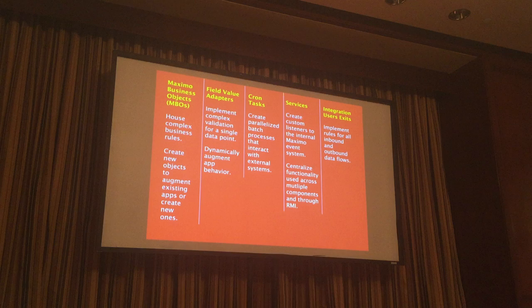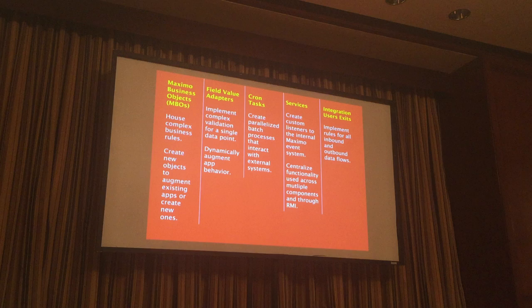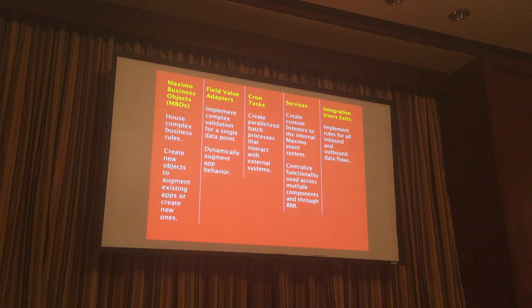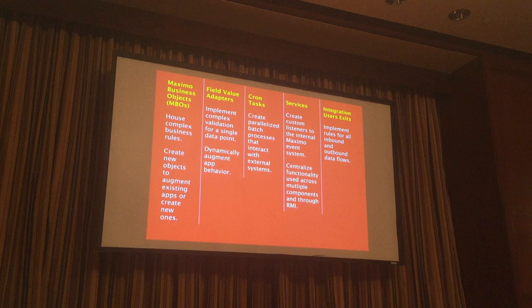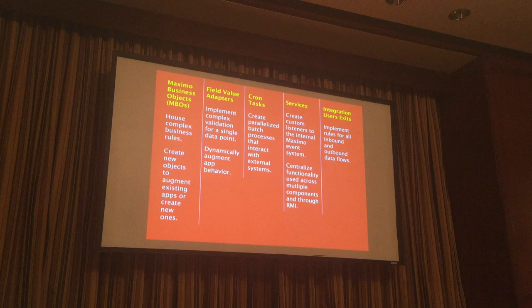Services are used primarily for two things: custom listeners where you listen to the Maximo event system and take actions based on what you see, and centralizing functionality across multiple MBOs. If you have some common things you do across multiple MBOs, put the functionality inside a service. Also, if you have a service, you can call methods from RMI. If you want to build a process you call in a discrete fashion — rather than doing a lot of processing with the base Maximo function and incurring a lot of network traffic — you build your logic into a service that resides inside Maximo and interact with it directly.